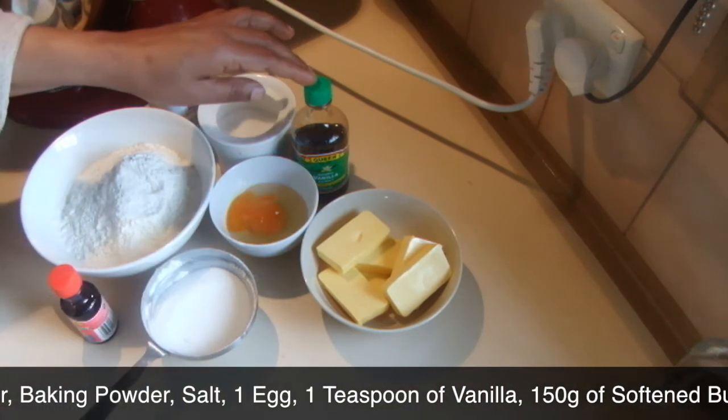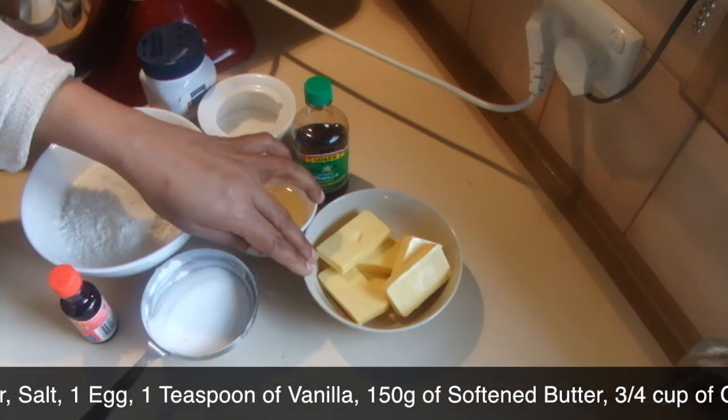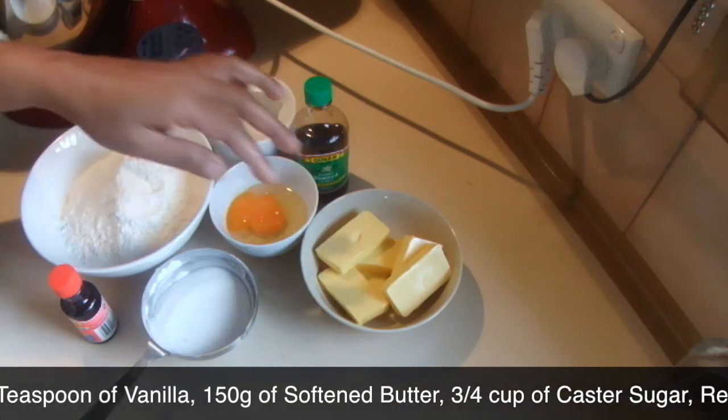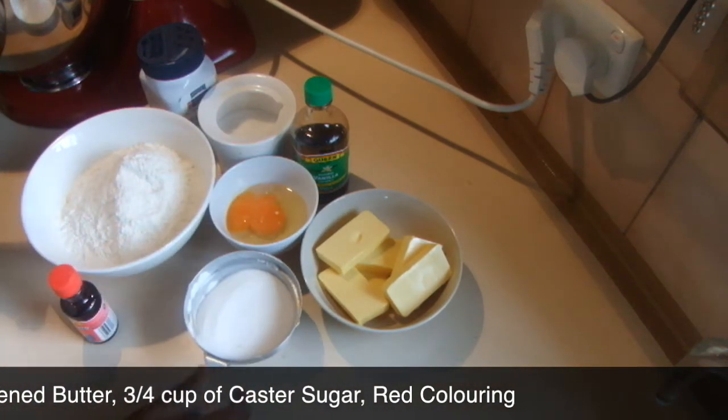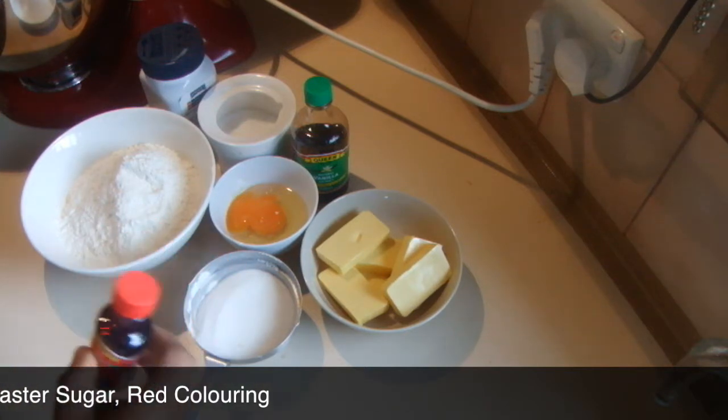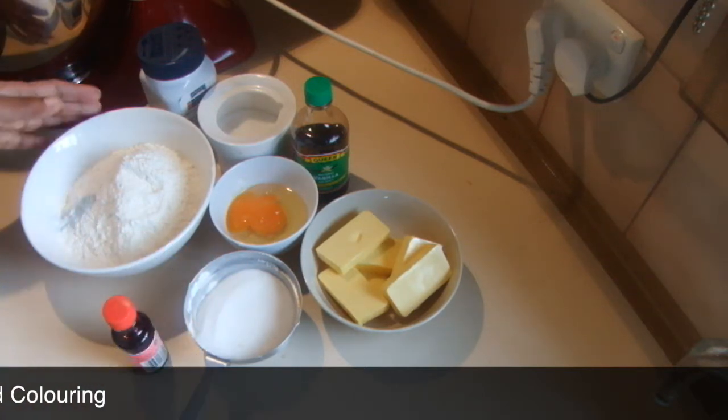One egg, one teaspoon of vanilla, 150 grams of softened butter, three-quarters of a cup of caster sugar, and red coloring.